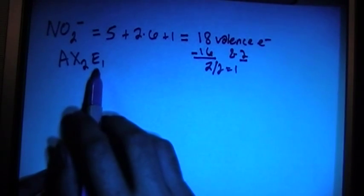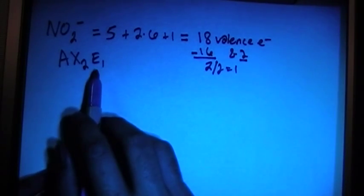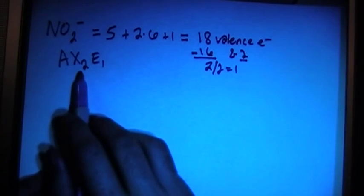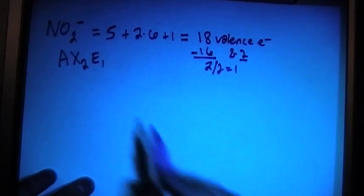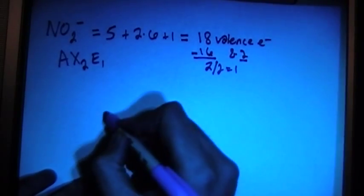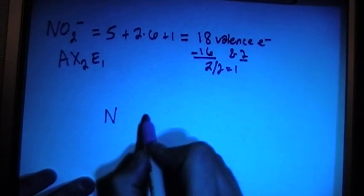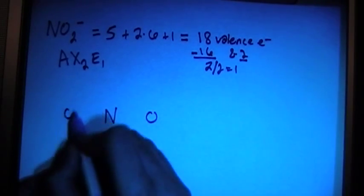Where there's one pair of lone electrons on the central atom and two bonding atoms attached to it, so that's going to be the two oxygens. So let's go ahead and try to draw this. We have nitrogen in the center and then two oxygens.